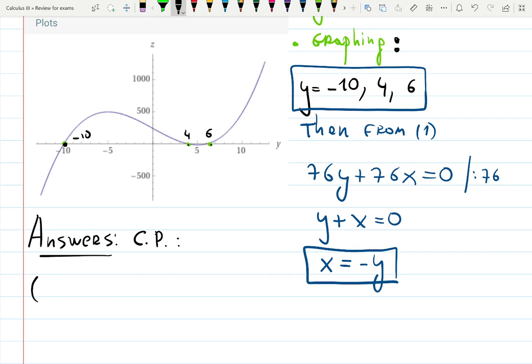When y is minus 10, x should be minus y, so it is plus 10. That's a pair. When y is 4, x should be minus 4. And when y is 6, x should be minus 6.